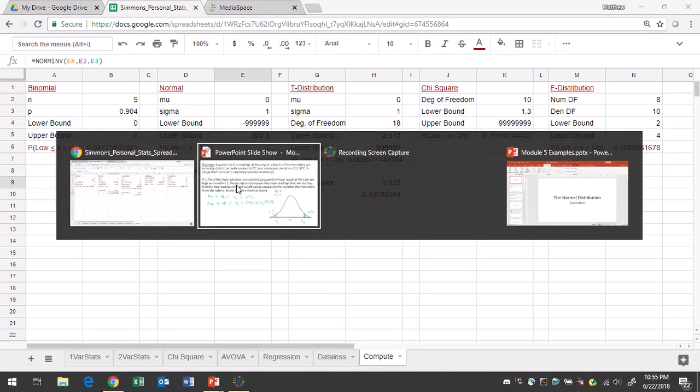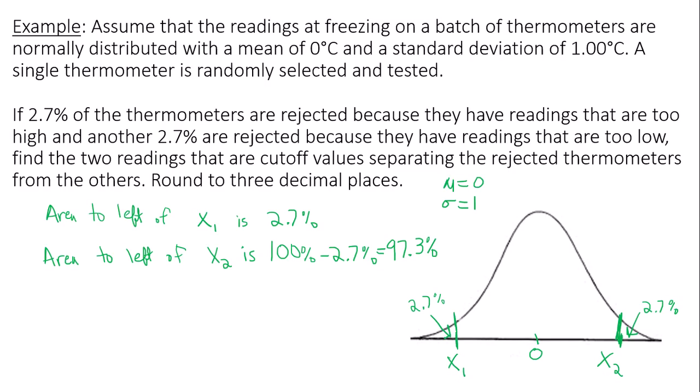So let's write these values down. So I have x1 is equal to negative 1.927. And my second data value, the upper cutoff value, would be 1.927.